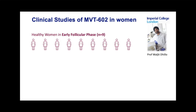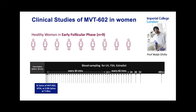Therefore, Professor Walgett Dillo's group at Imperial College London conducted clinical studies to delineate for the first time the endocrine profile of NVT602 in women. Nine healthy women received a single subcutaneous injection of NVT602 or the native Kisspeptin compound Kisspeptin-54 in the early follicular phase, followed by an extended duration of detailed endocrine sampling.